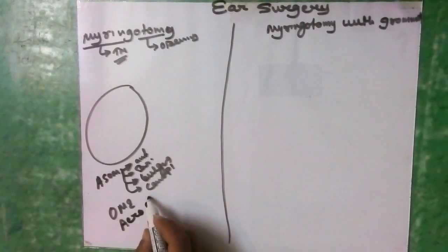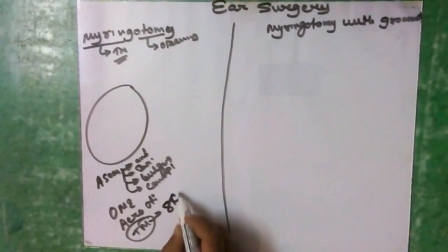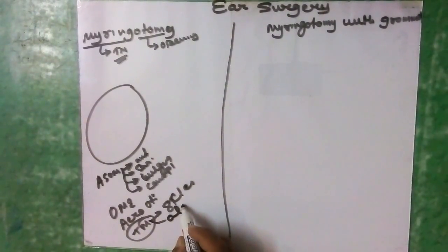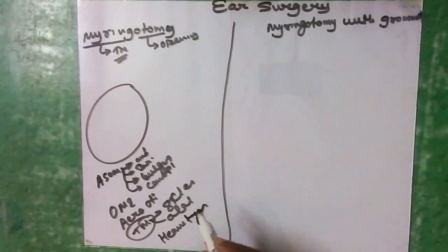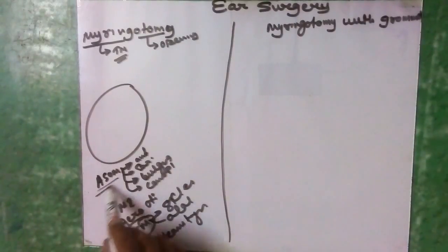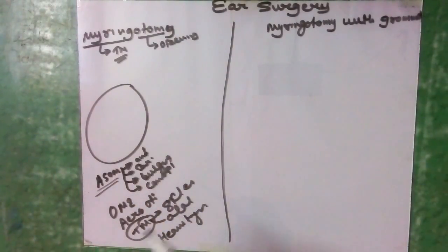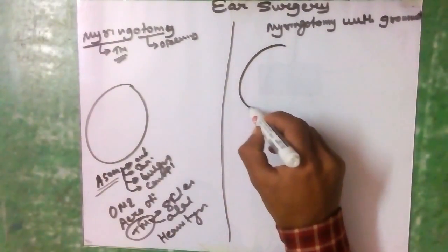Other indications include aero otitis media, tympanic membrane abnormalities such as tympanosclerosis or atelectasis, and hemotympanum — meaning blood in the middle ear. In these conditions we need to create an opening so that the fluid inside the ear can come out.